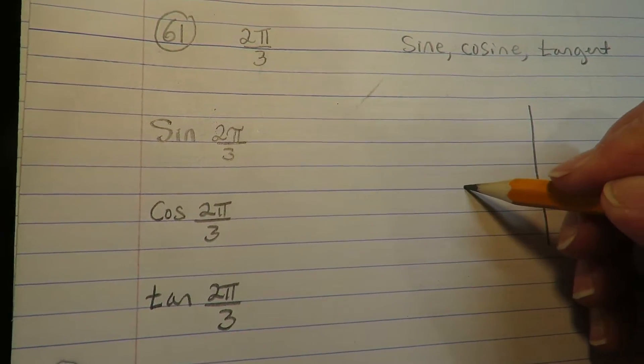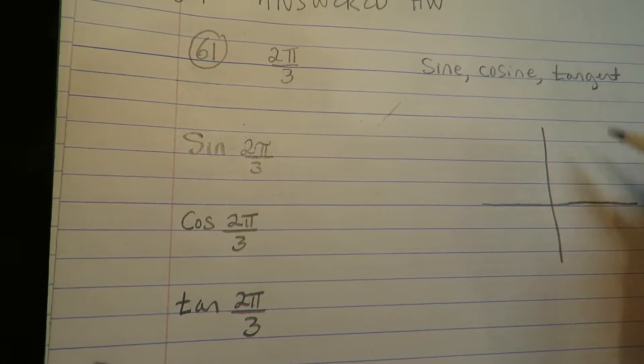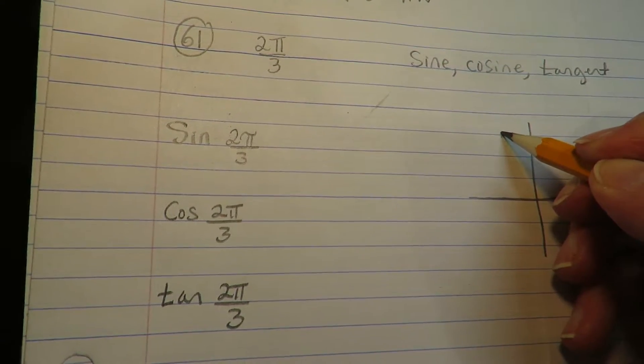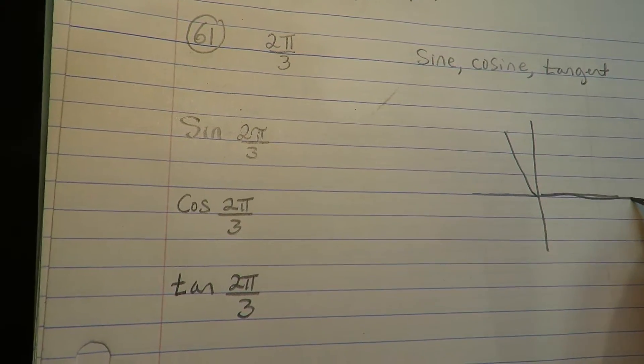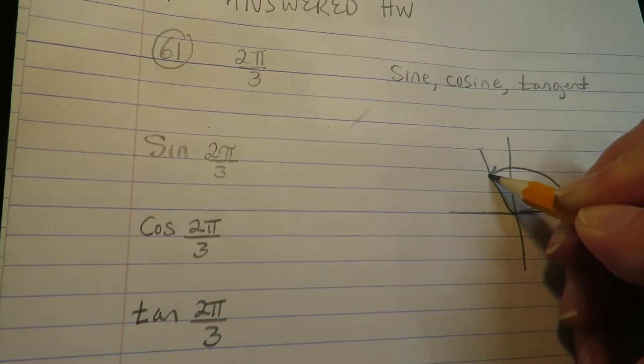Alright, so I'll say that again as I go through it. So 2π/3 is about from here to here.